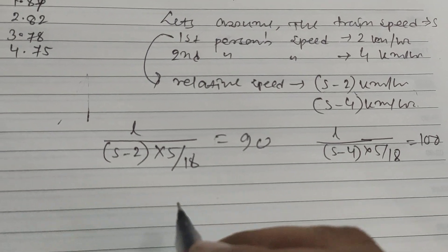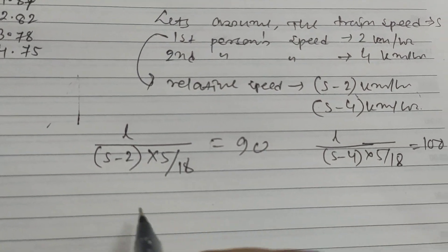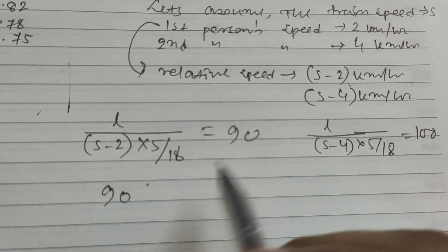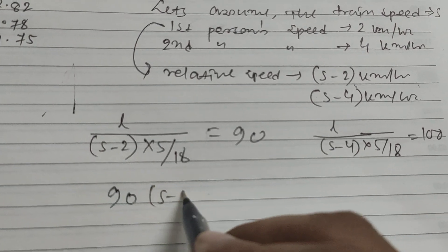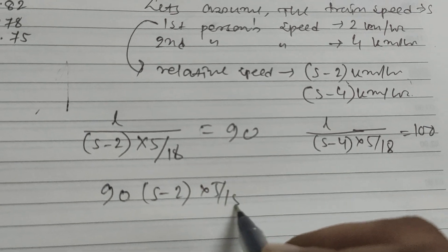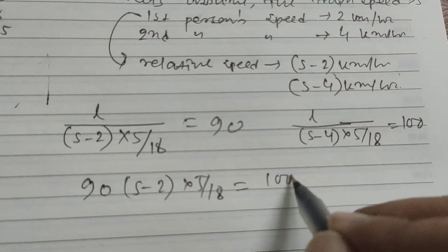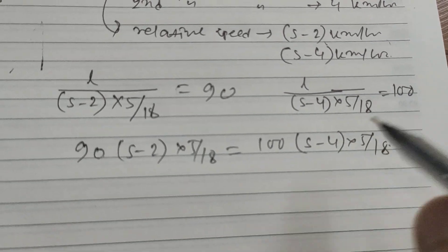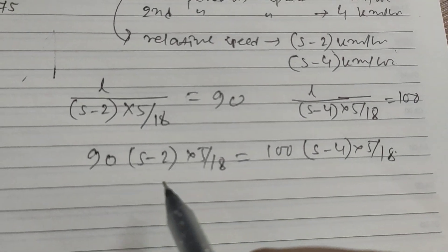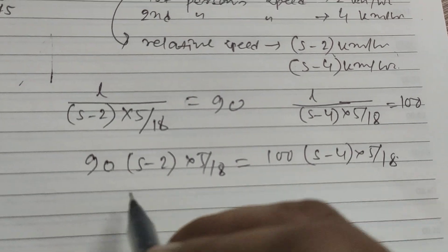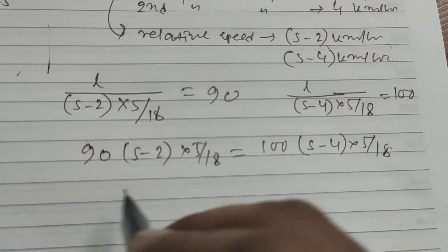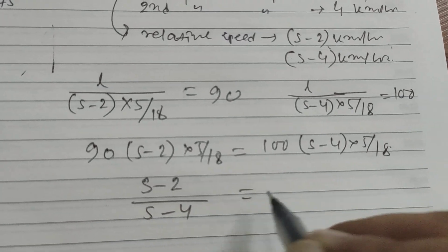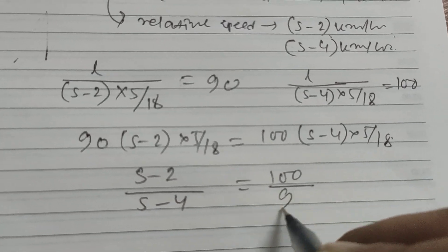90 into s minus 2 into 5 by 18 equals 100 into s minus 4 into 5 by 18. You can cancel out the 5 by 18 for both parts. So s minus 2 divided by s minus 4 equals 100 by 90.